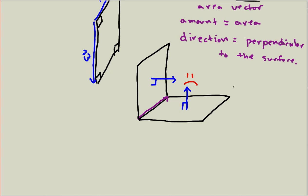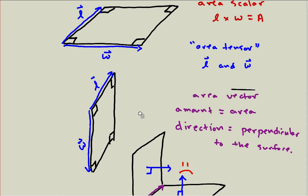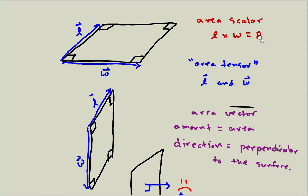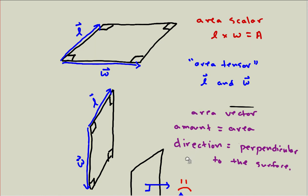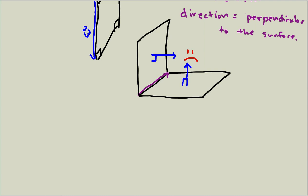So that has more information than our area scalar did because our area scalar just told us how much area. So now we can tell which direction they are but it has less information in it than our area tensor. In particular we don't really know what shape this area is anymore. I drew a rectangle but there's no reason it needs to be a rectangle and I don't know if it has like maybe it's a square or maybe its length is much bigger than its width. I don't have any of that information. And it'll turn out that we won't need that information either.